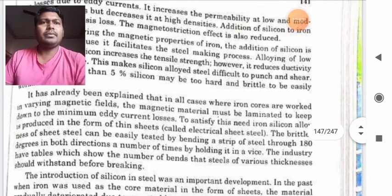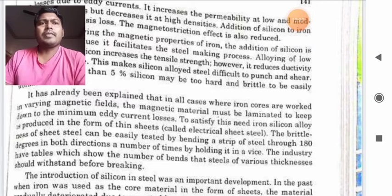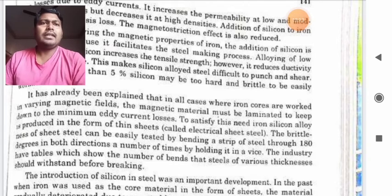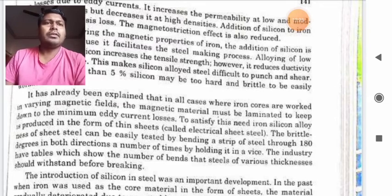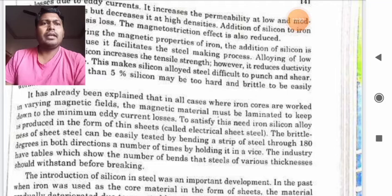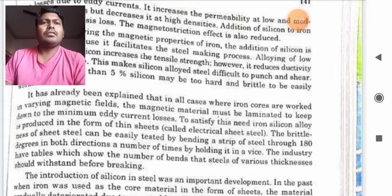It has been explained that in all the cases where iron cores are worked in varying magnetic fields, the magnetic material must be laminated to keep down to the minimum ED current losses. To satisfy these needs, iron-silicon alloy is produced in the form of thin sheets. The brittleness of steel can be easily tested by bending a strip of steel through 180 degrees in both directions, a number of times by holding in a vice. The industries have tables which show number of bends that steels of various thickness should withstand before breaking.